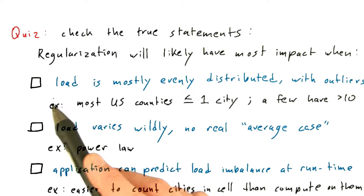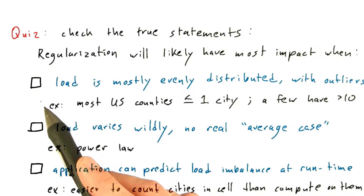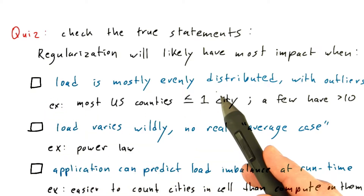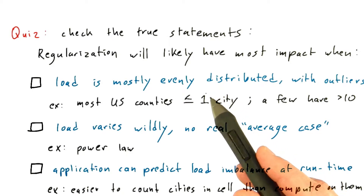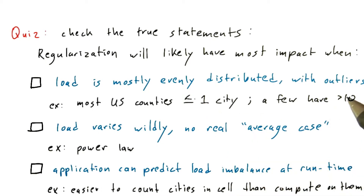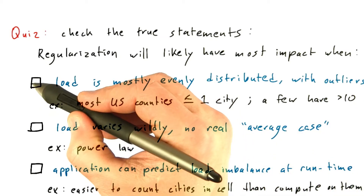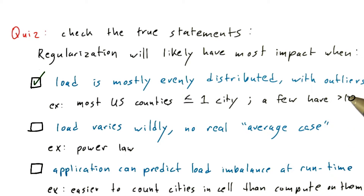This first example is a good case for regularization. The load is mostly evenly distributed, so there is some regular, average case that you can shoot for that'll be relatively easy to predict. Occasionally you'll have outliers, and you can deal with them separately in another algorithm or on another processor, as we discussed before. So I would consider this a good case for regularization — it's likely that we can come up with a regularization strategy here that'll work.